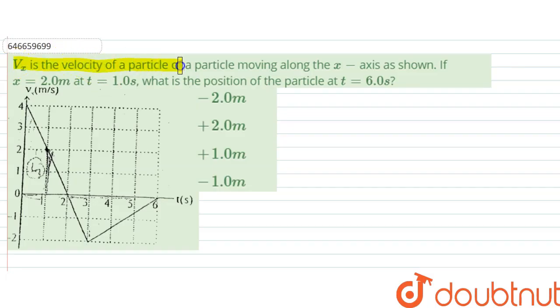Hello, we are given a question. The question says: vx is the velocity of a particle moving along the x-axis as shown in the figure. If x is 2 meters at t equals 1 second, what is the position of the particle at t equals 6 seconds?